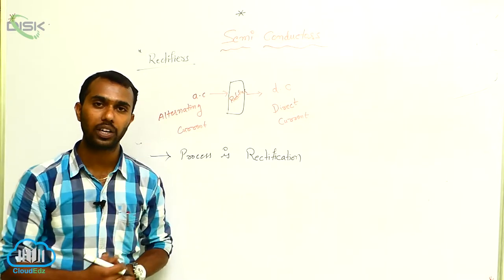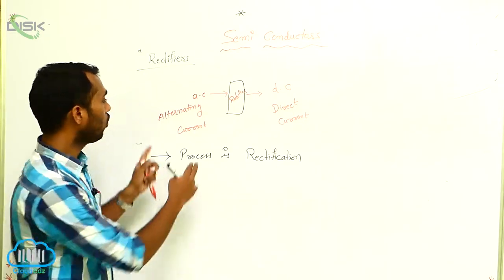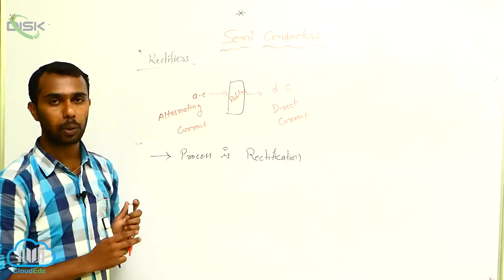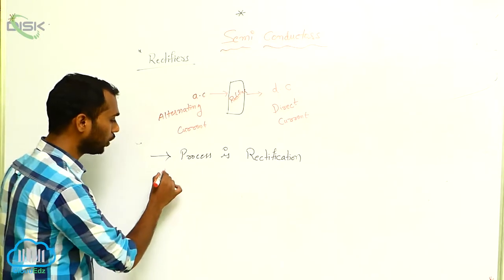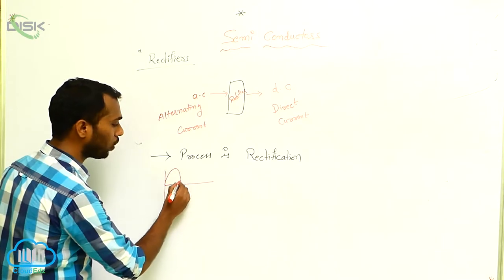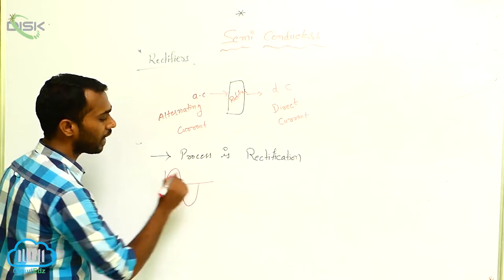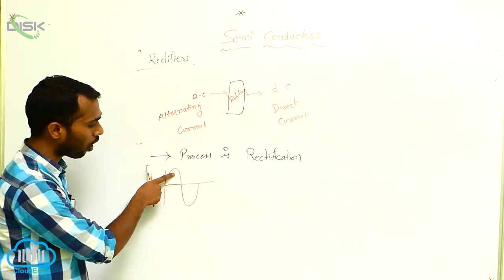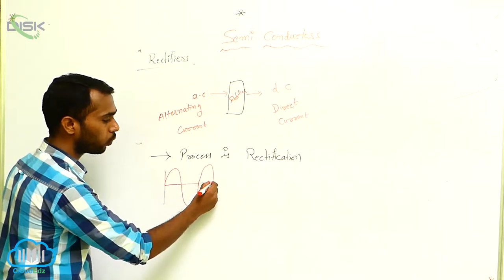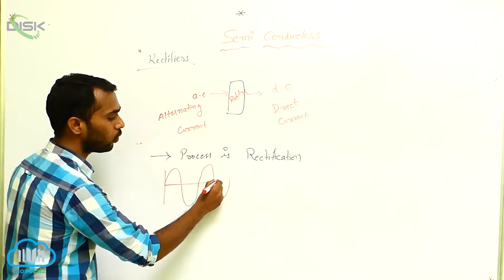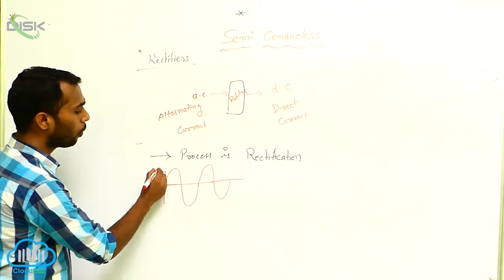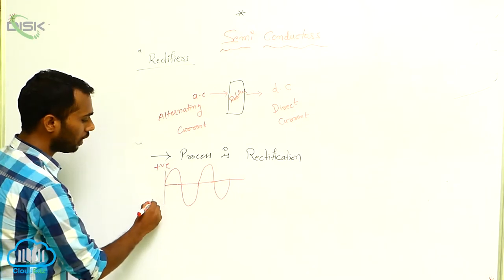Before entering into half wave rectifier and full wave rectifier, first of all we have to know the alternating current properties. Alternating current has two directions — one is a positive direction and the next one is a negative direction. It has a positive half and a negative half. So there are two directions: positive and negative.